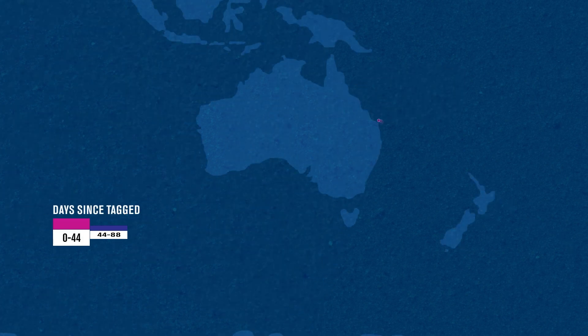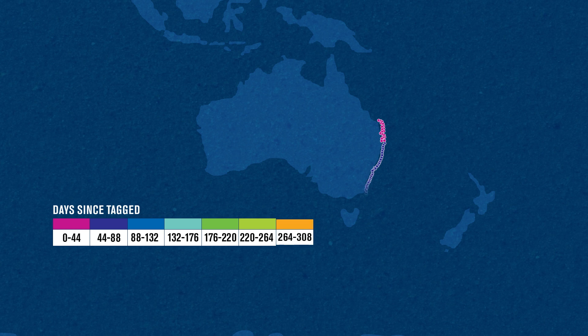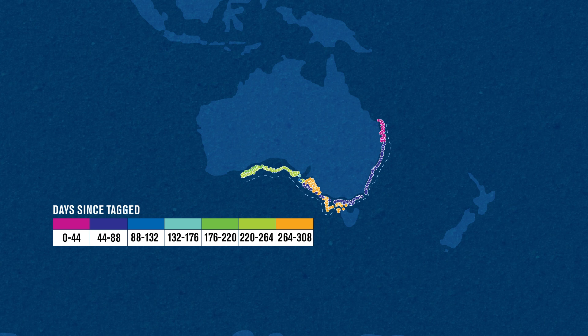Some sharks have travelled huge distances in just a matter of days. In one instance, Shark 28, a 3.06 metre male white shark tagged and released off South Ballina Beach on July 5, 2016, has travelled more than 13,000 kilometres to Western Australia and back to NSW in just 10 months.